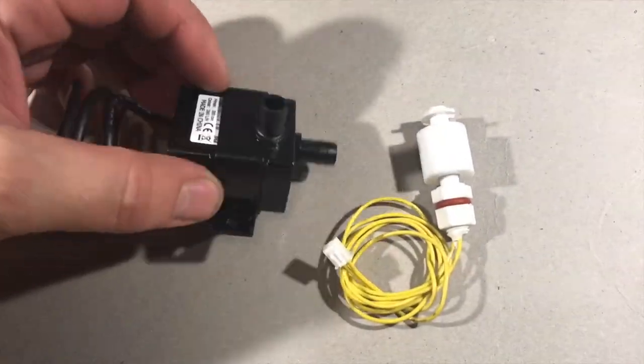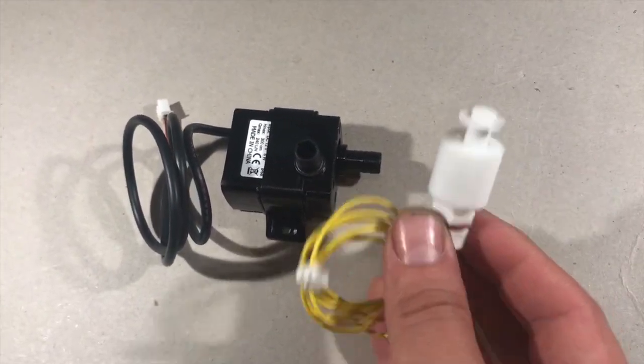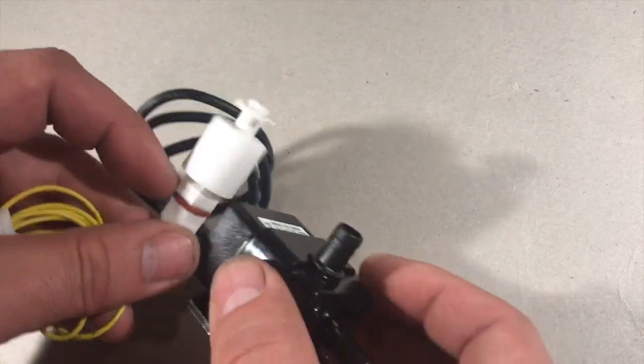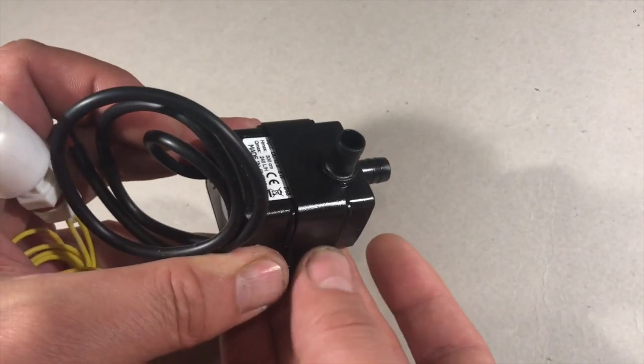Today I'm going to show you how to take a submersible DC water pump and attach a water level sensor switch to it in a way that allows it to protect it from operating when the water gets below the point of operation.